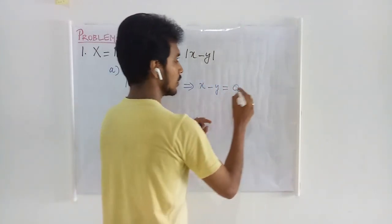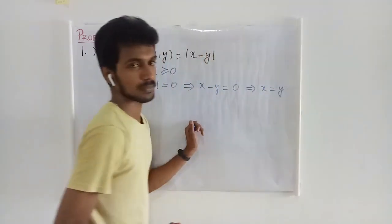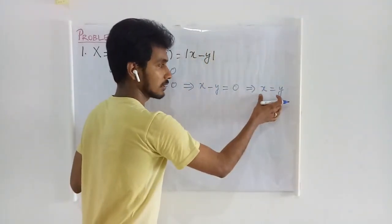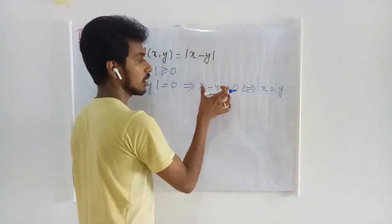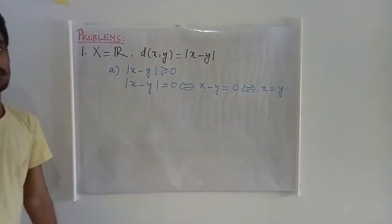If this is true, then I will have x and y are same. And if x and y are same, then x minus y is 0. If x minus y is 0, then absolute of x minus y is 0.